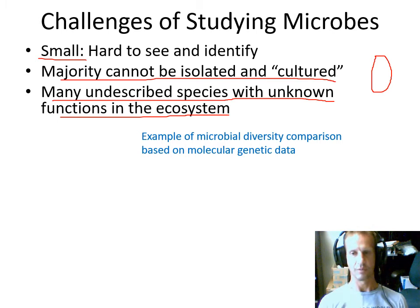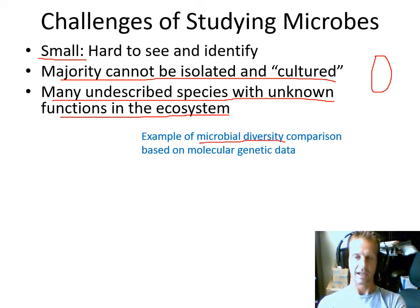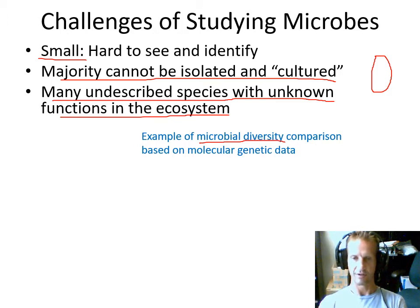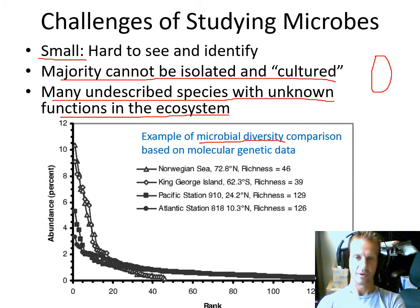There are many undescribed species known only by their genetic signatures, but we don't know well what they're doing in the ecosystem. This is a field being actively worked on. Marine microbiologists can compare the microbial diversity of different areas with genetic techniques — taking a scoop of seawater, amplifying certain sections of the microbial genome, sequencing them, and figuring out how many different variations exist in that genetic sequence, which tells you how many different types of microbes are present.